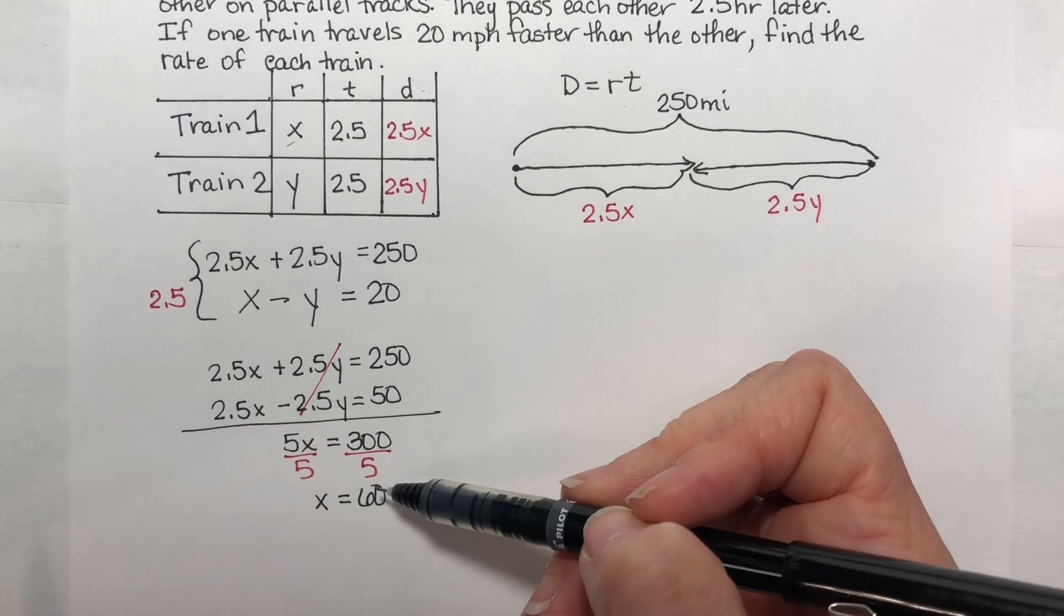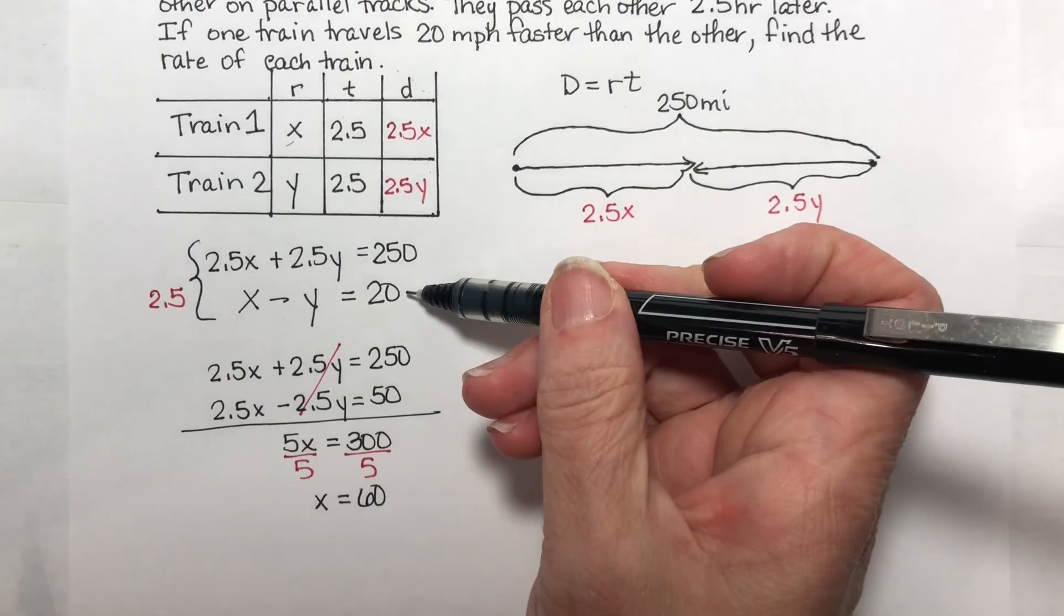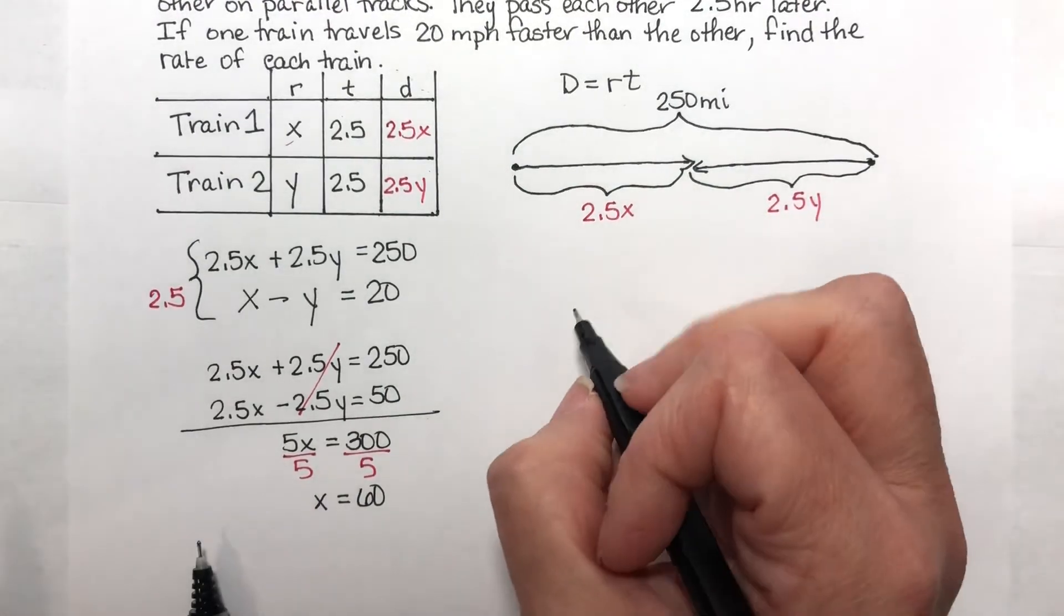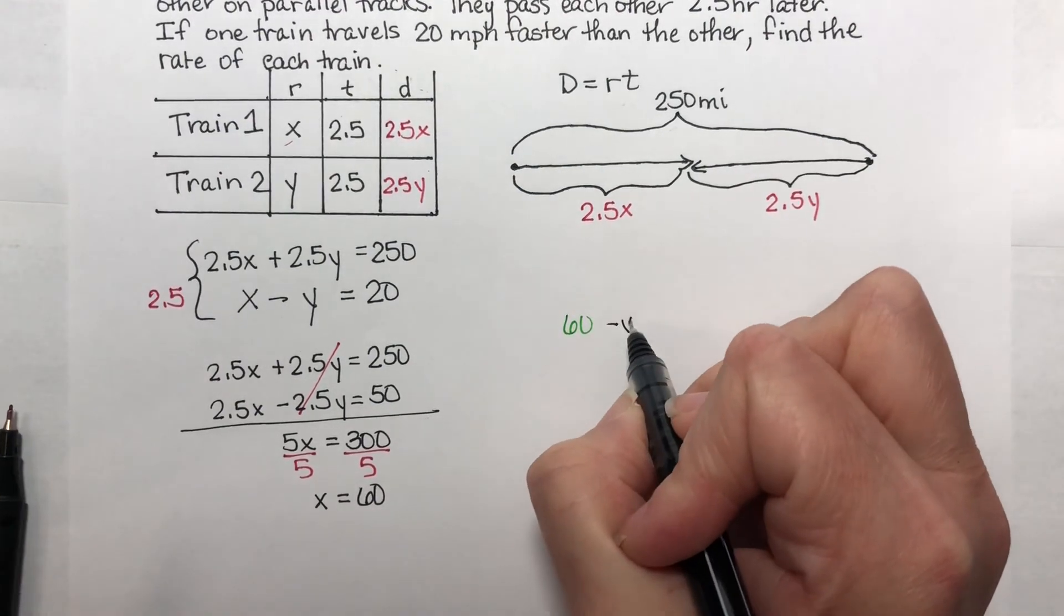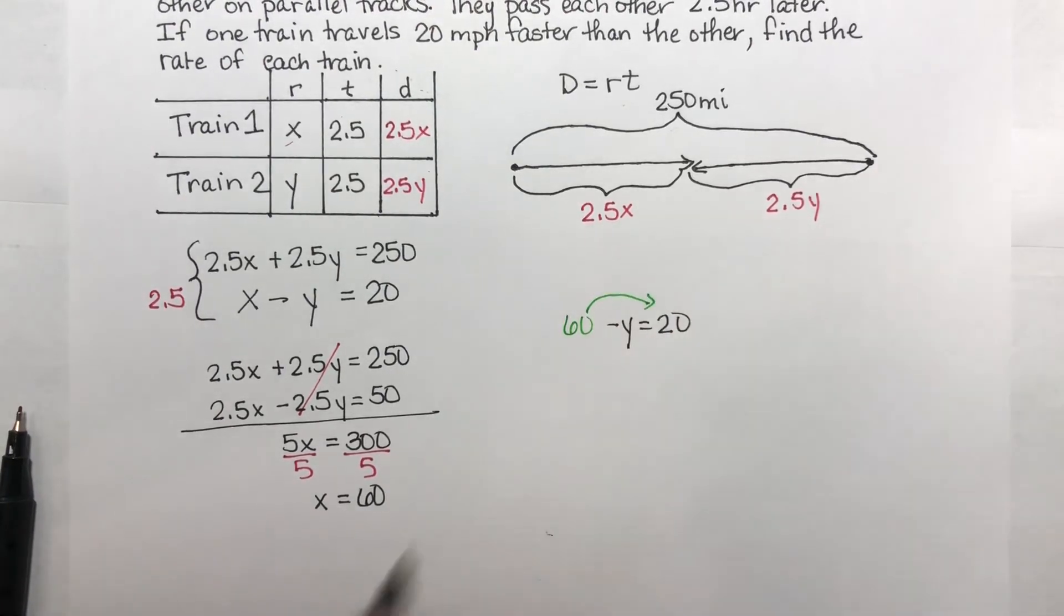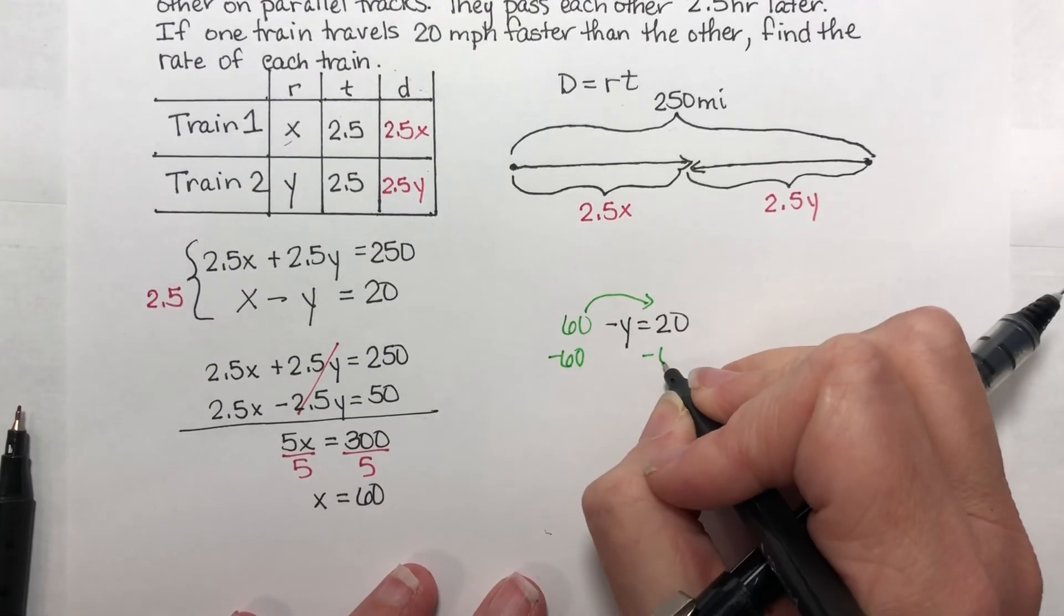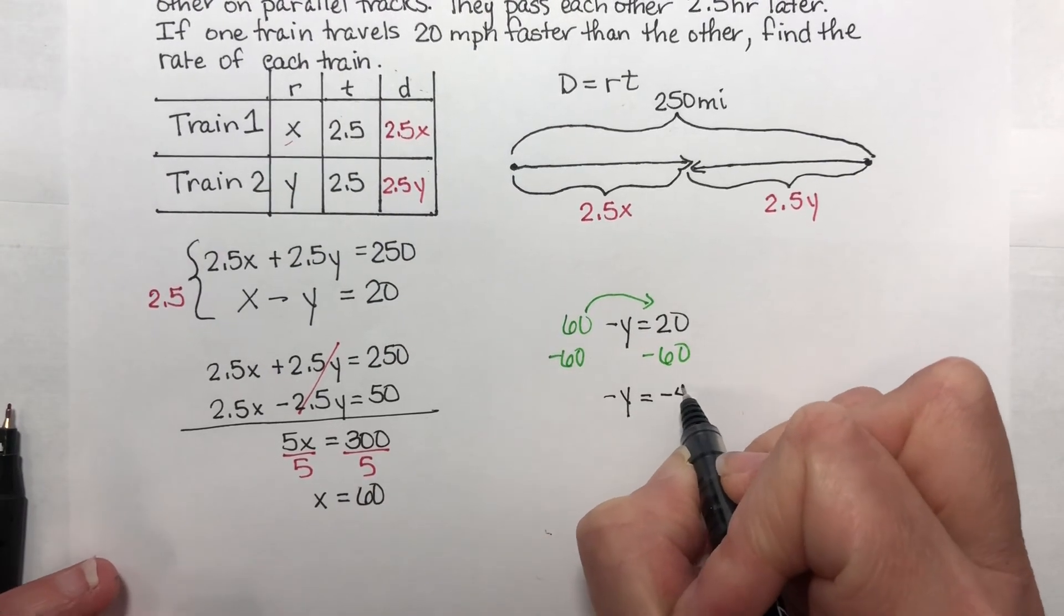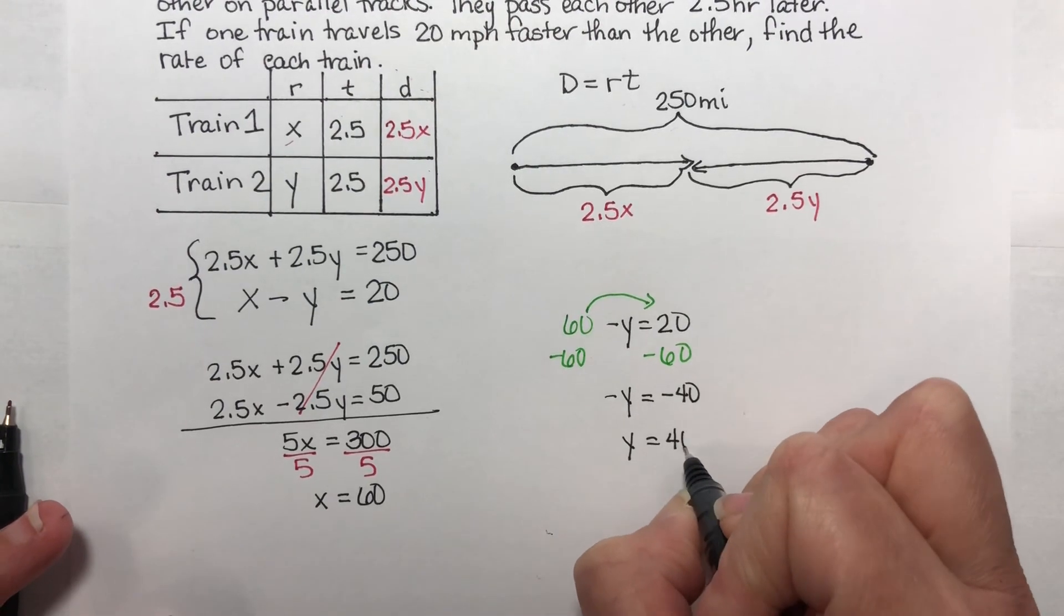Okay, how fast is the other one going? Because we are asked for each. I take this value and I plug it in somewhere. I think this one is a lot easier. That gives me 60 minus y equals 20. I need to move this 60 over to here. So I subtract 60 from both sides. And you get negative y is equal to negative 40. And you change the signs on both sides. And so you get y equal to 40. You could probably do this in your head.